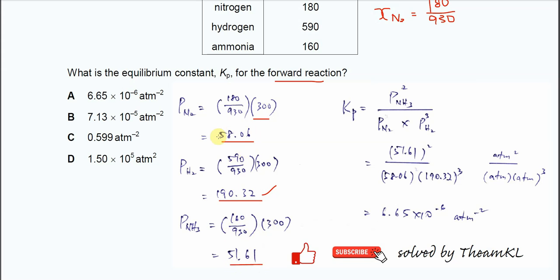Once you get all the partial pressures, you can substitute into the Kp expression. It's the partial pressure of NH₃ squared over the partial pressure of N₂ times the partial pressure of H₂ cubed.